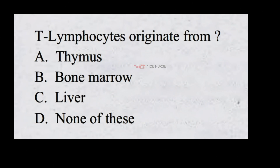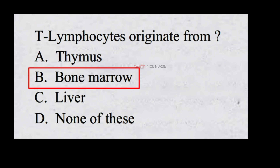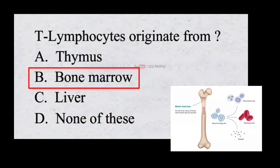T lymphocytes originate from: A. Thymus B. Bone marrow C. Liver D. None of these. The correct answer is B. Bone marrow. T lymphocytes originate from the bone marrow.